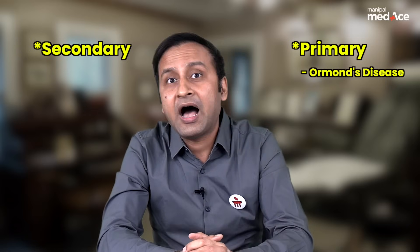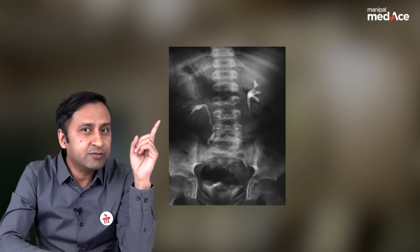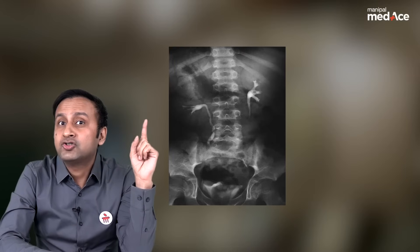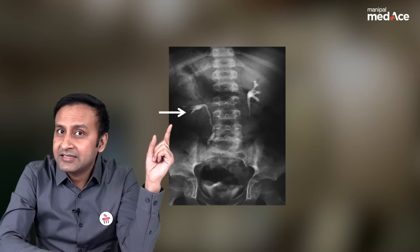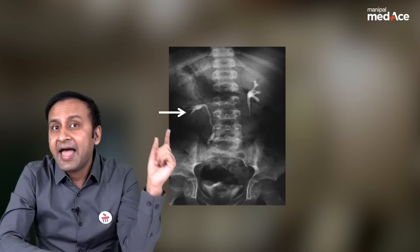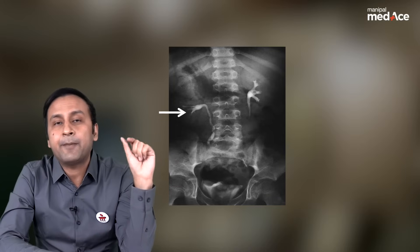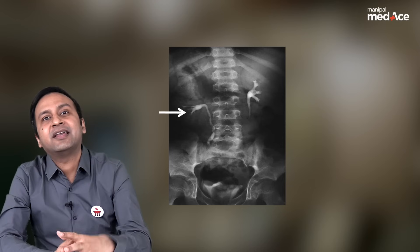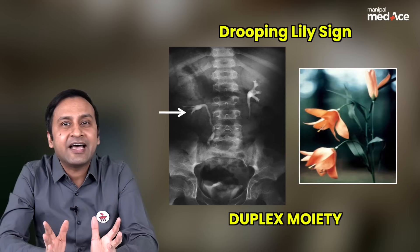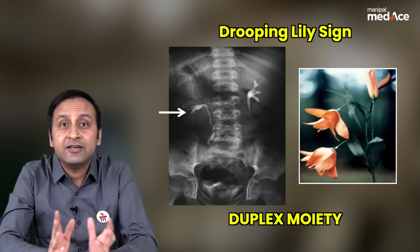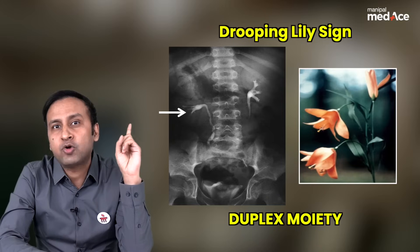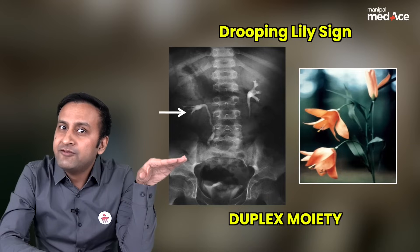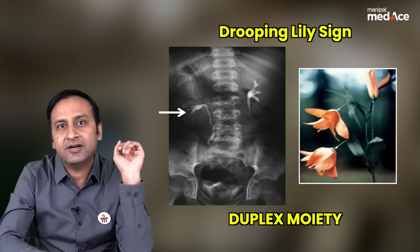Let's look at our next case. In this radiograph, there is non-visualization of the upper calyces of the right kidney and a drooping appearance of the lower calyces of the same kidney. This sign is called the drooping lily sign, and is a classical sign of a duplex moiety, in which the upper pole moiety is abnormally hydronephrotic and non-functional, pushing the normally functioning lower moiety inferiorly.